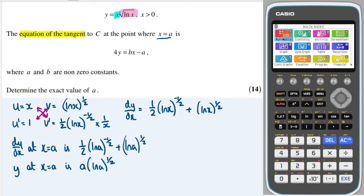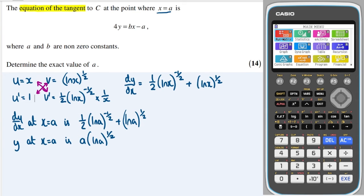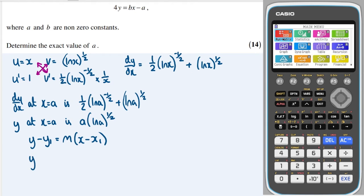Okay, next step is to use my equation of a straight line, which is y minus y1 equals m(x minus x1). I'm going to sub in my gradient, and I'm going to sub in my x, y point. So my y value, which we worked out, was a(ln a) to the half.